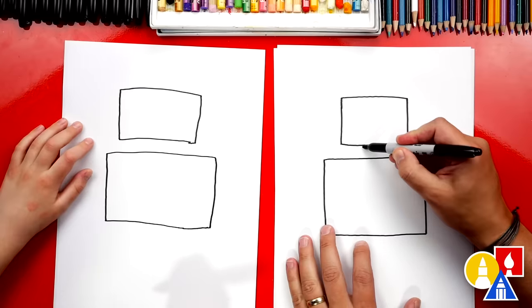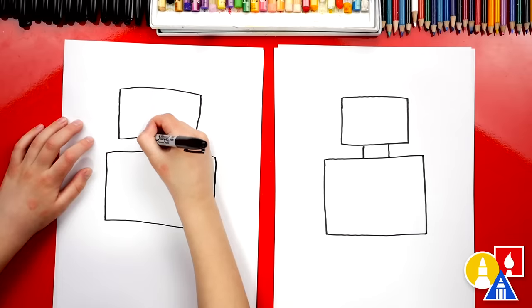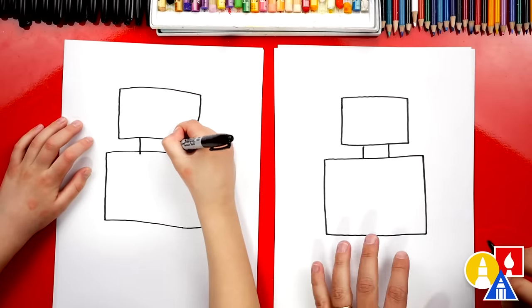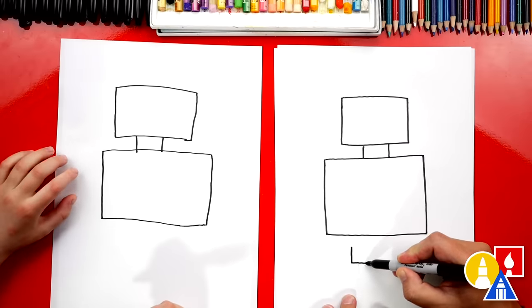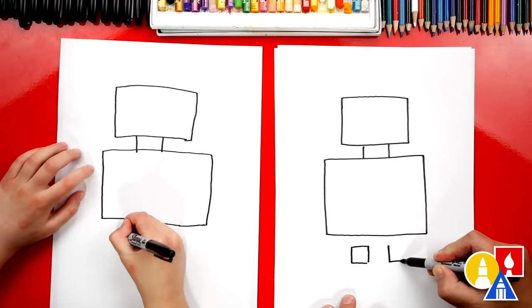Let's draw the neck. We're going to draw two lines down and connect the head to the body. Let's draw the legs. We're going to draw two square shapes, one and then another one right next to it.